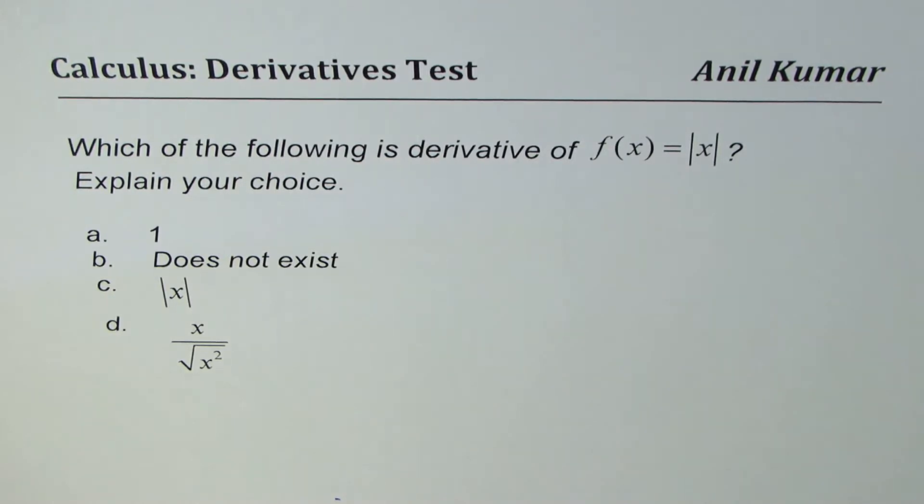We are given four different choices. One, does not exist, absolute x, x over square root of x squared. You can pause the video, answer the question, and then look into my solutions.